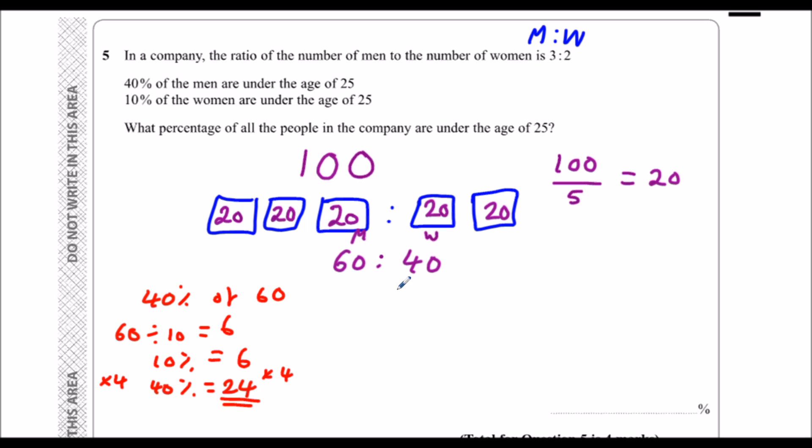And for the women, I want 10% of 40. 40 divided by 10 is 4. So 10% is 4. So I've got 24% under 25 here, 4% under 25 here. So of all the people, that's 28%.